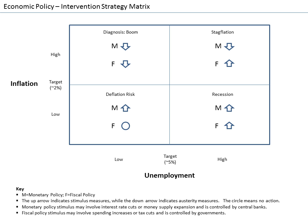Macroeconomics descended from the once divided fields of business cycle theory and monetary theory. The quantity theory of money was particularly influential prior to World War II. It took many forms, including the version based on the work of Irving Fisher: MV = PQ. In the typical view of the quantity theory, money velocity and the quantity of goods produced, Q, would be constant, so any increase in money supply would lead to a direct increase in price level. The quantity theory of money was a central part of the classical theory of the economy that prevailed in the early 20th century.